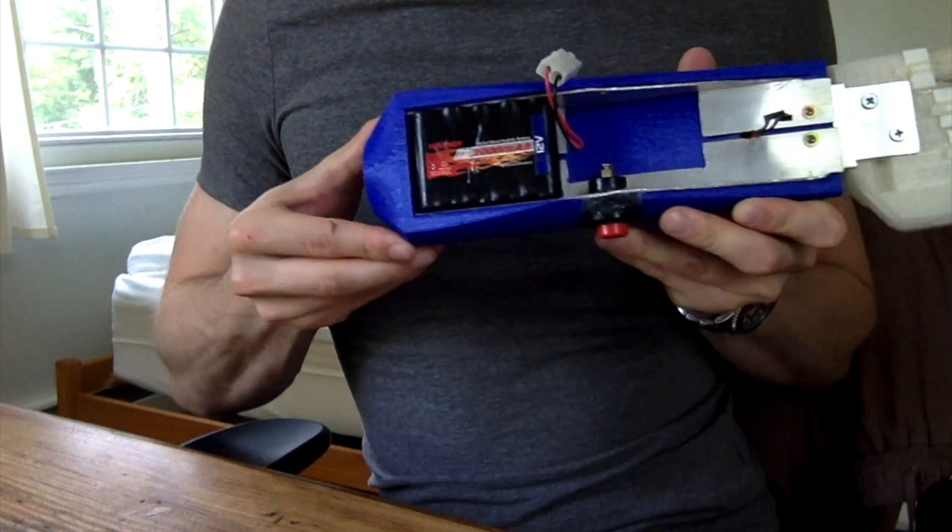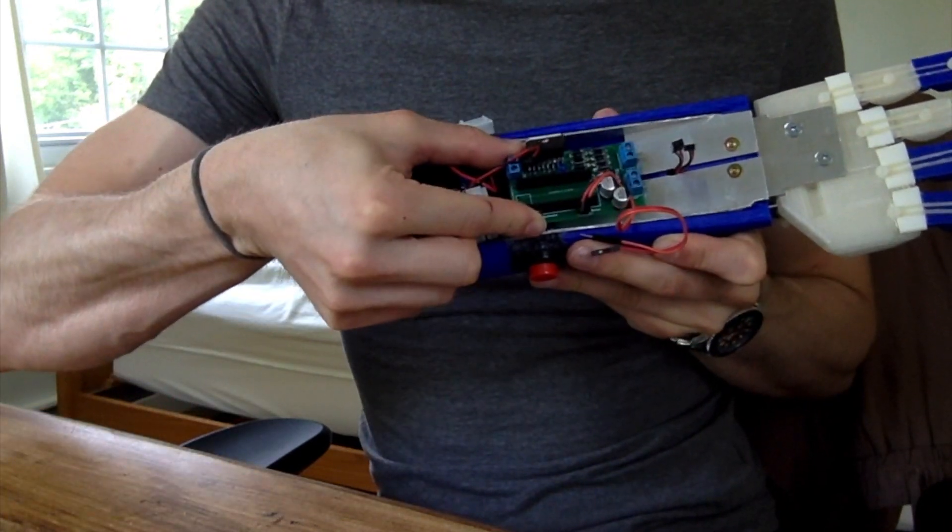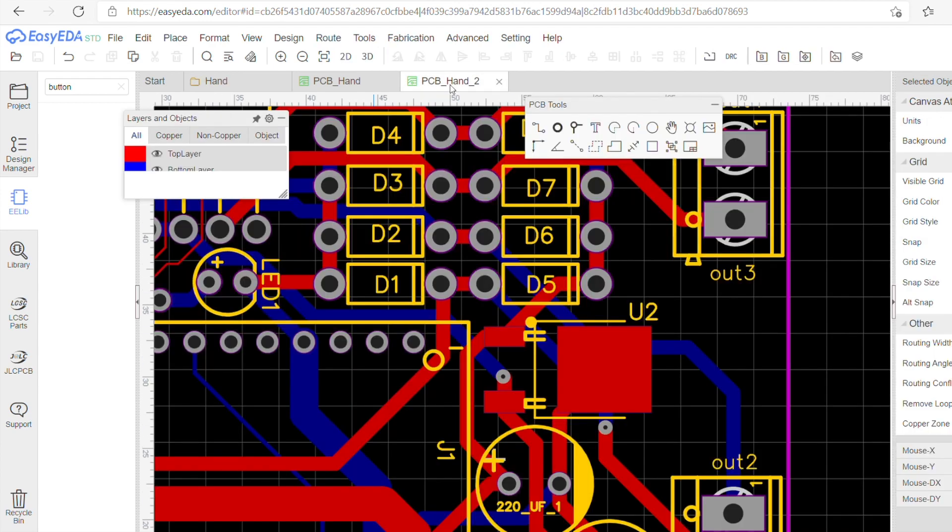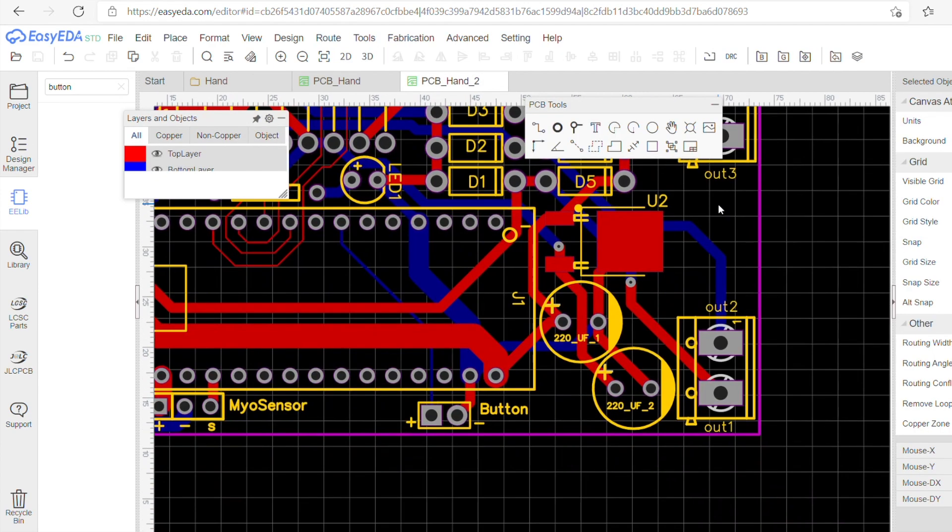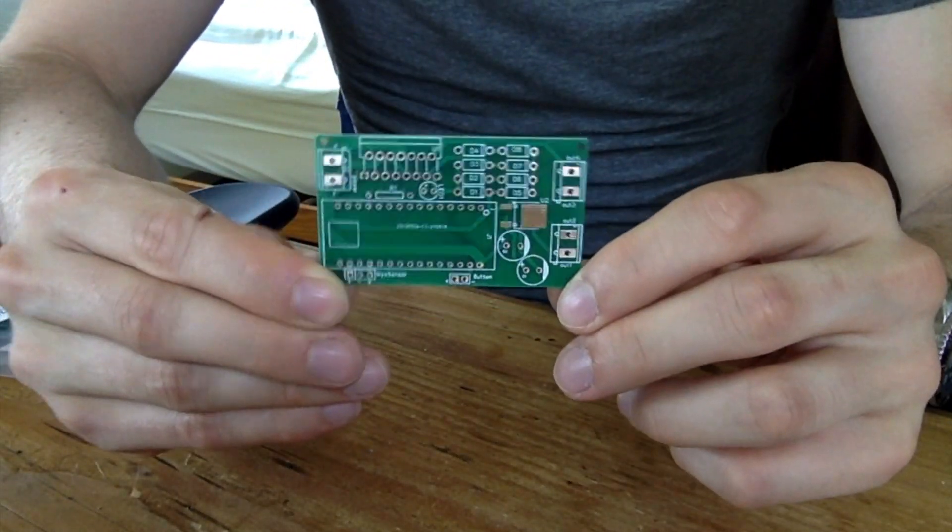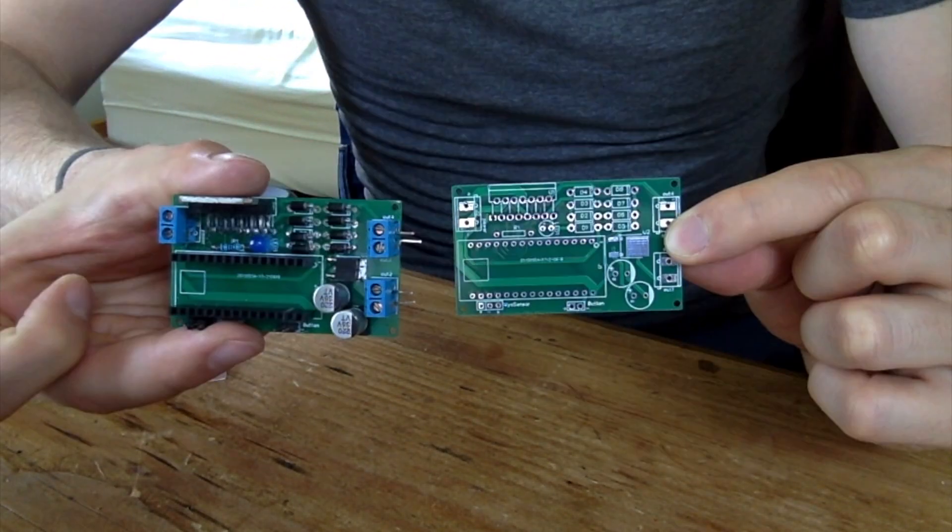I reduced the electronics down to a single custom circuit board, which fits here. I designed the circuit using EasyEDA, then created a board layout and sent the Gerber files to JLCPCB to get printed. They look like this when they arrived, and after soldering on all the components, we get a complete board.